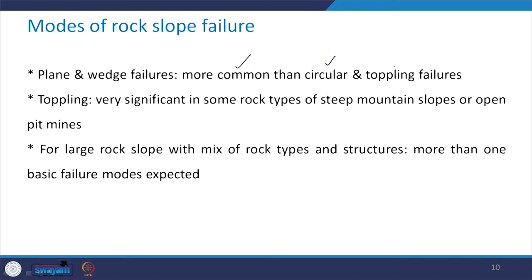Plane and wedge failures are more common than circular and toppling failures. Toppling failure is very significant in some rock types of steep mountain slopes or in the case of open pit mines. For large rock slopes with a mix of rock types and structure, one can observe more than one of these four basic failure modes, making the analysis even more critical.